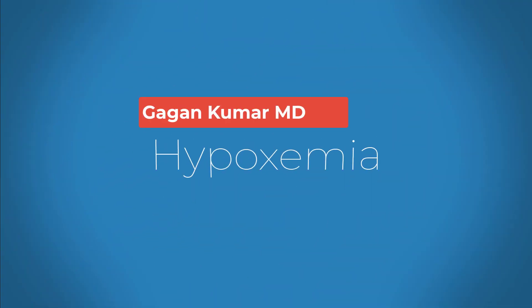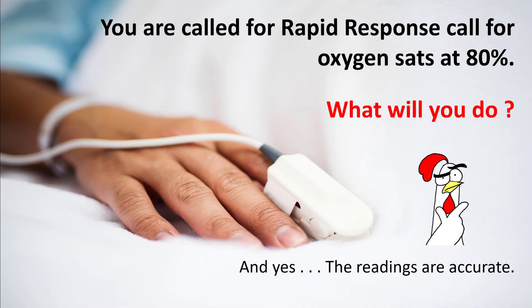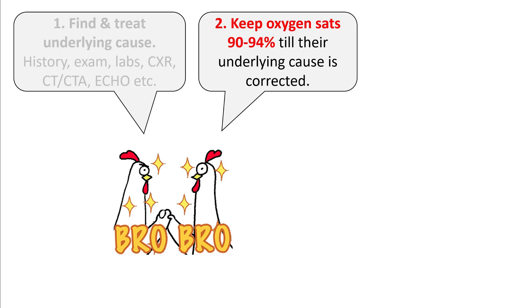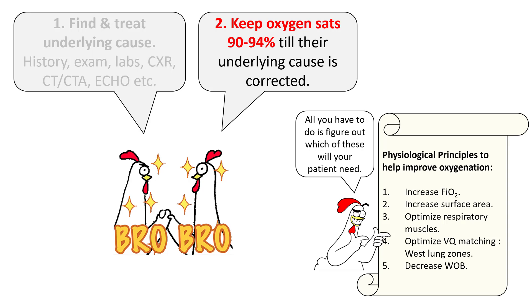Hello everyone. Today we will continue to discuss our case of a patient with hypoxemia and trying to figure out how to work them up. In the previous lecture, we understood how to find the underlying cause. In this lecture, we will discuss how to keep these patients stable with their oxygen sats around 90 to 94% till their underlying cause is found and corrected.